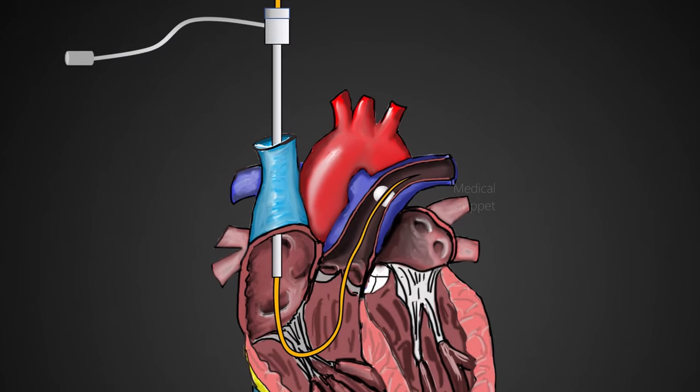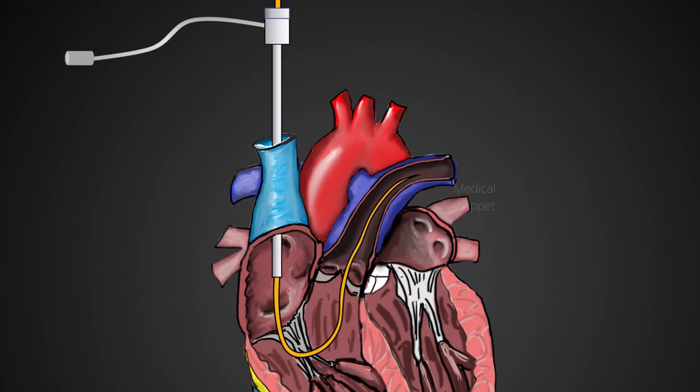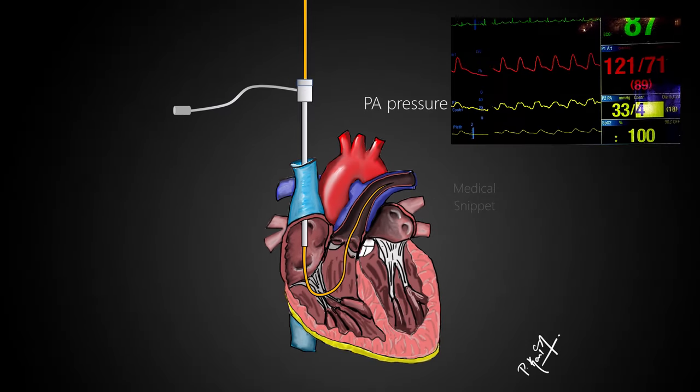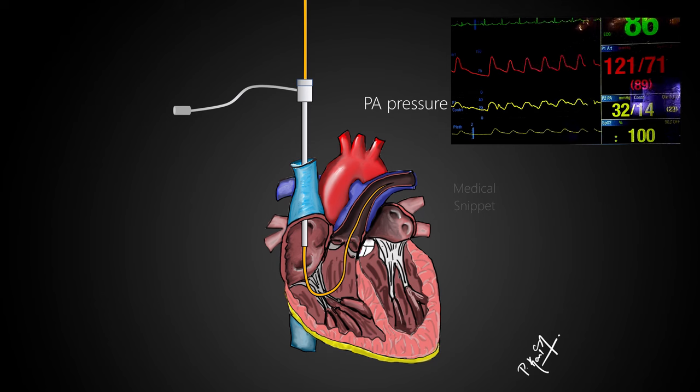Once the wedge trace is obtained, the balloon is deflated and return of pulmonary artery pressure trace is confirmed. If the PA trace is not obtained, the catheter is withdrawn slightly till the PA trace appears.